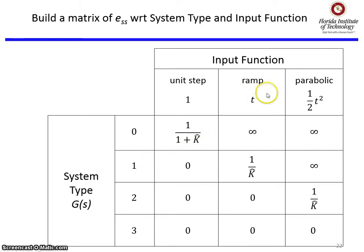If your system needs to track ramp inputs, you can't do it with a type 0 system. You've got to be type 1 or higher, and maybe you want to be type 2 or higher so that you have zero steady-state error. Again, if you can only get type 1, then you want to make k-hat really large so that the steady-state error is small.